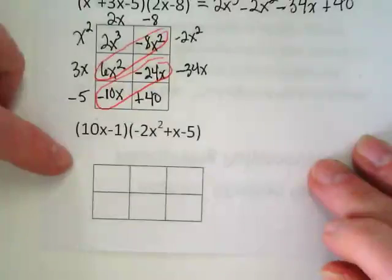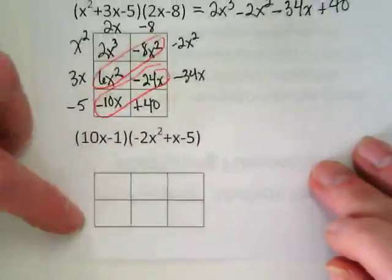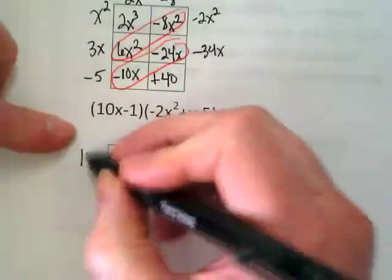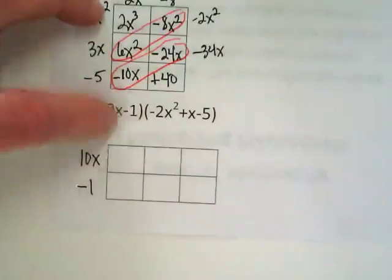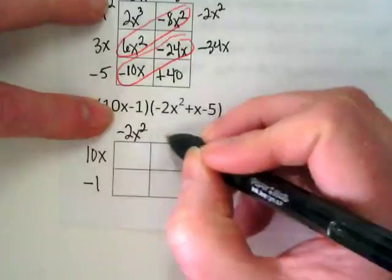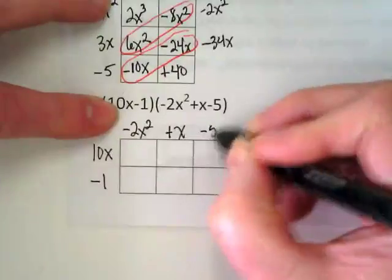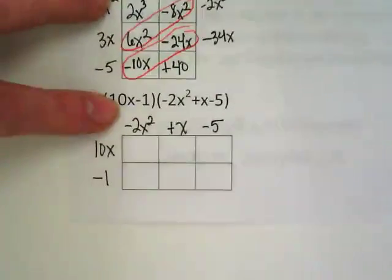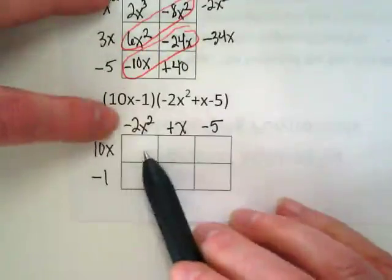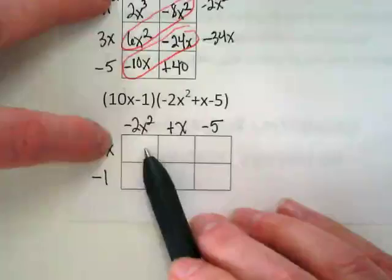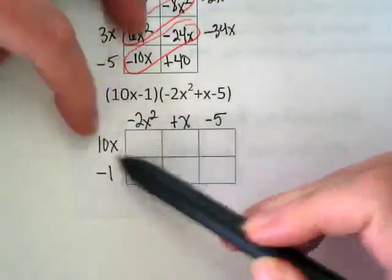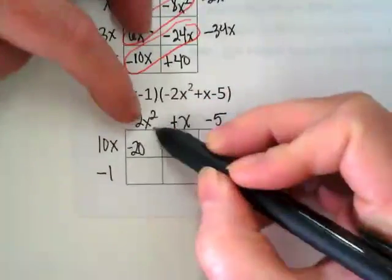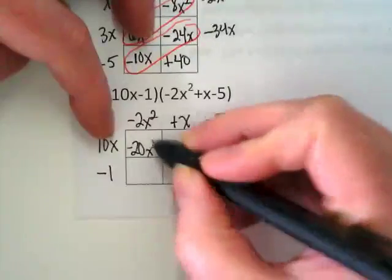The way this box is set up, we're going to put the binomial down the side and the trinomial across the top. 10x minus 1. What's going to go above this box? Negative 2x squared plus x minus 5. We're going to multiply these two. I really want you guys to picture this. It's like a times table. Remember how when you were little and you had the times tables and you ran your fingers because you didn't want to lose track? That's really what we're doing here. Negative 2 times positive 10 is going to be negative 20. x squared times x is going to be x to the 3rd. Negative 2x squared times negative 1 is going to become positive 2x squared.